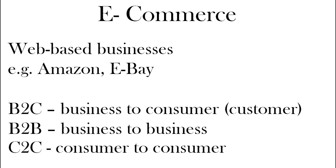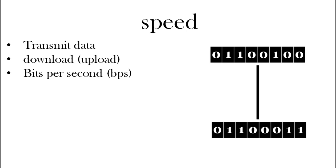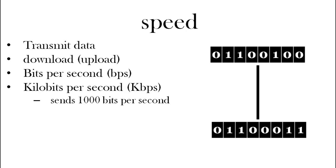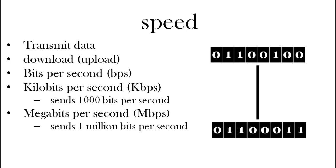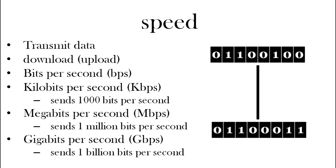The speed of the internet: when you purchase a contract for internet at home or in a company, you'll buy based on its download speed. We measure that in bits per second — how fast it transmits data. A kilobit is a thousand bits per second (Kbps). Megabits per second is a million bits per second. And gigabits per second (Gbps) is a billion bits per second.